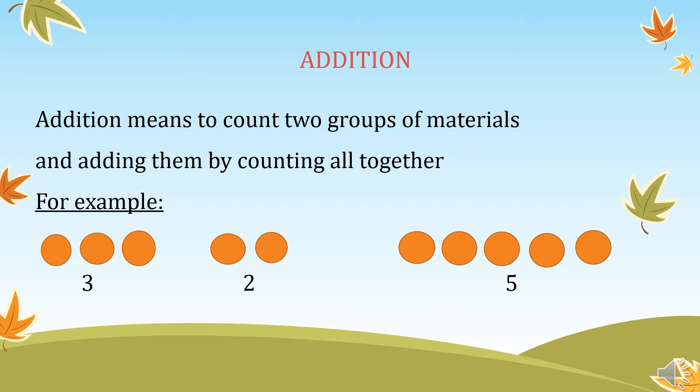Addition means to count two groups of materials and adding them all together. For example, we have two groups of circles. The first group contains three circles. The second group contains two circles. The sum of the first and second group is one, two, three, four, five.